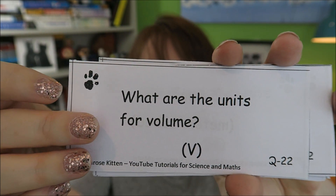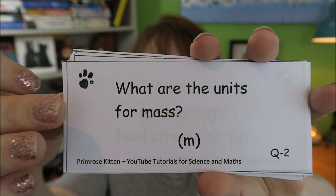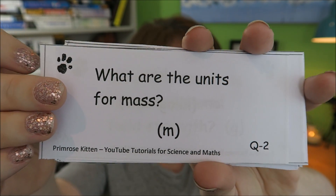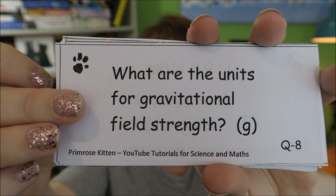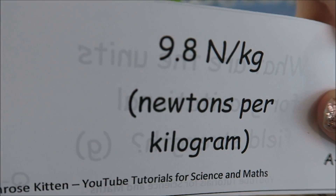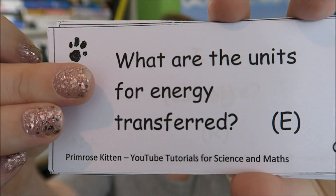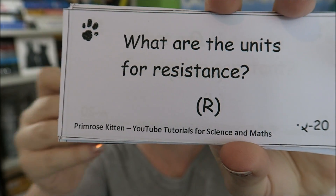What are the units for volume? Volume is measured in meters cubed. What are the units for mass? One of the ones that is always confused — mass is measured in kilograms. What are the units for gravitational field strength? Gravitational field strength is measured in newtons per kilogram and the value for it is 9.8. They may give you that in the exam, they may not, so it is worth learning 9.8 newtons per kilogram. What are the units for energy transferred? All energy is measured in joules.